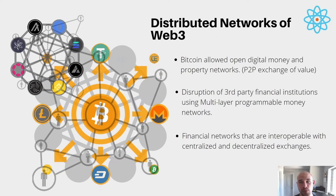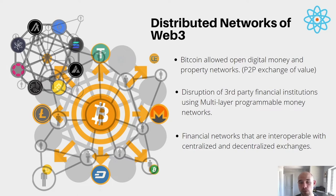Bitcoin really allowed open digital money and property networks — peer-to-peer exchange of value. Bitcoin was the discovery and creation of an open source protocol that anybody can contribute to. It's a monetary network for the internet that is fair, decentralized, and democratized. Web 3 is possible because of Bitcoin — it wouldn't exist without it, so it's very important.